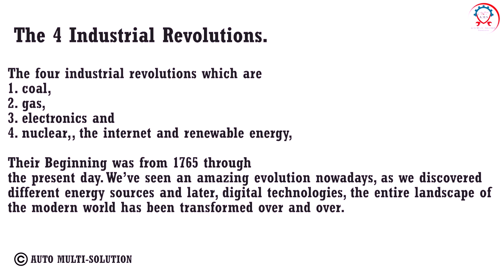The four industrial revolutions — coal, gas, electronics and nuclear, and internet and renewable energy — began from 1765 through the present day. We've seen an amazing evolution as we discovered different energy sources and later digital technologies. The entire landscape of the modern world has been transformed over and over. Here's a brief primer on the four industrial revolutions.